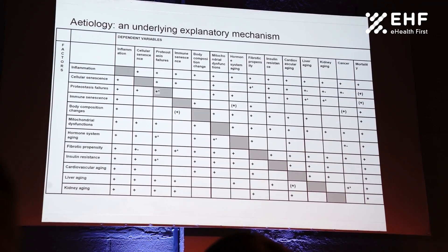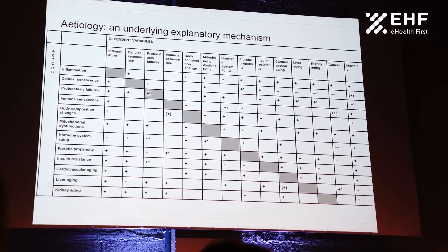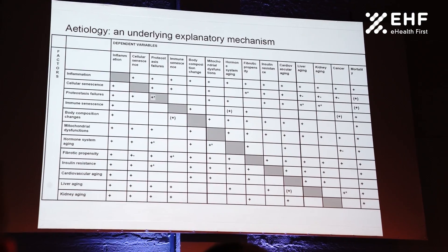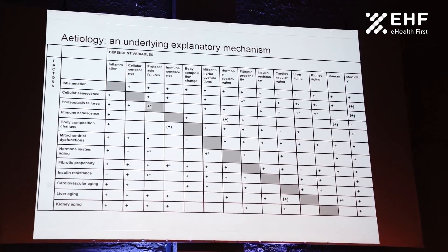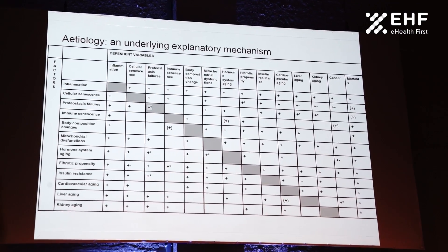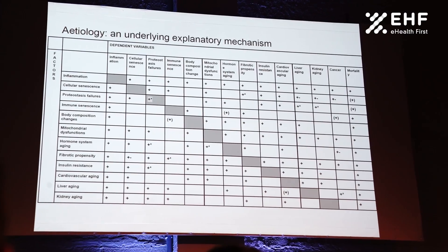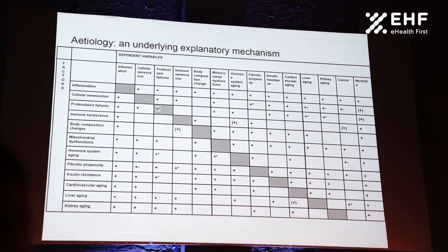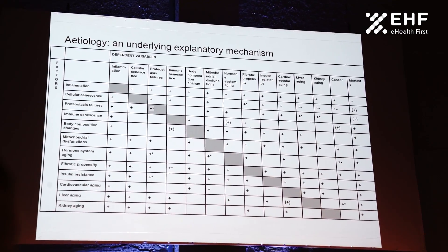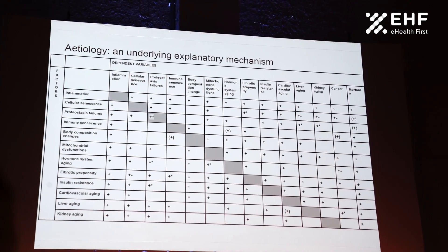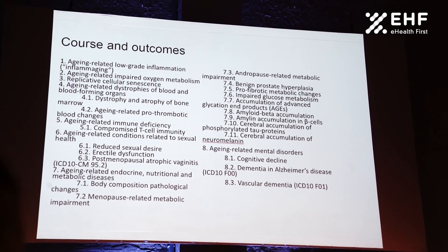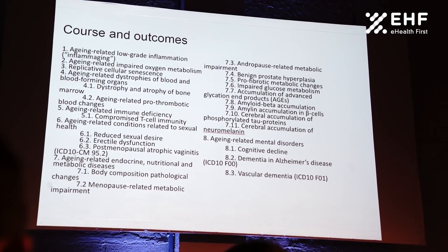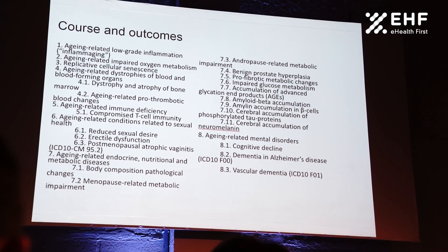We also identified mitochondrial dysfunction — and we included calcium metabolism dysfunction there, so it's only partly mitochondrial. Additionally, hormone system aging, fibrotic propensity — which is unfortunately not as popular in our community as it should be; it's a very big issue because it makes things irreversible — and insulin resistance. Some organ aging, such as cardiovascular, liver, and kidney aging, can itself initiate new cascades of pathogenesis. Neural aging can do this too. The complexity of aging is not infinite — it is finite — and these pathological processes are interrelated, forming a united process of aging.